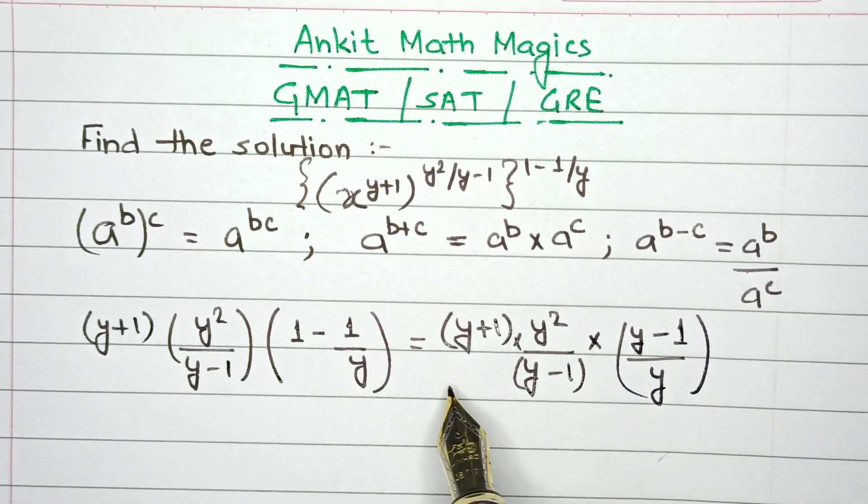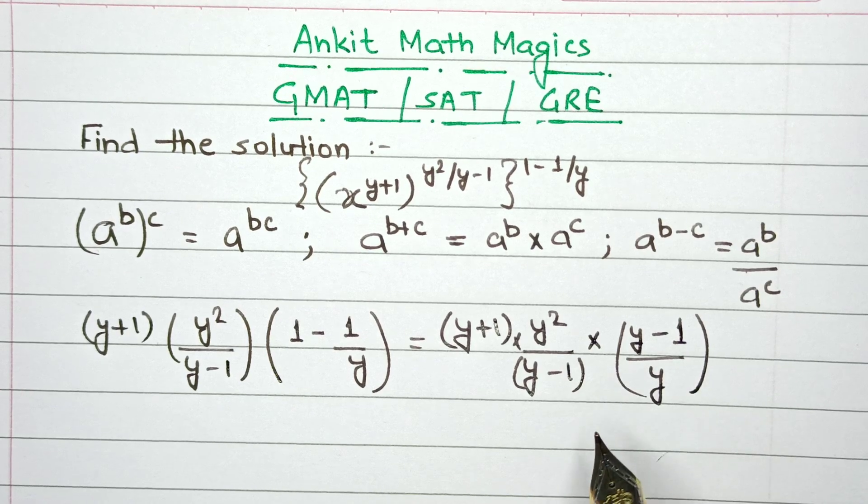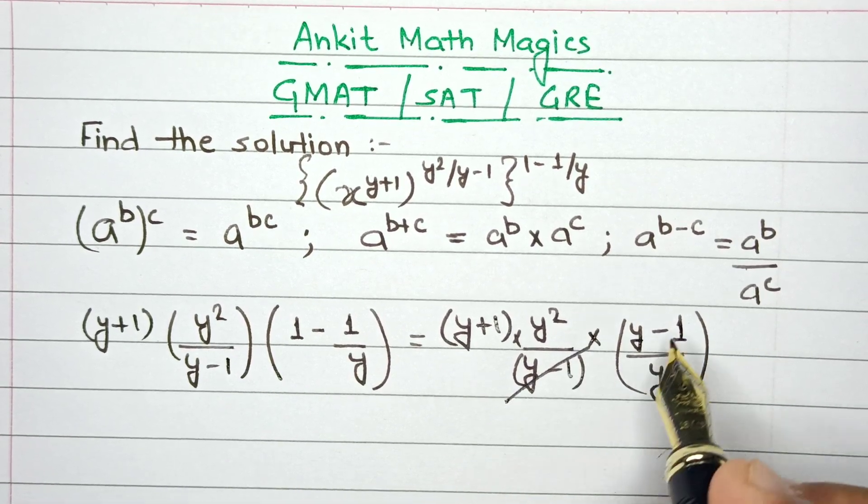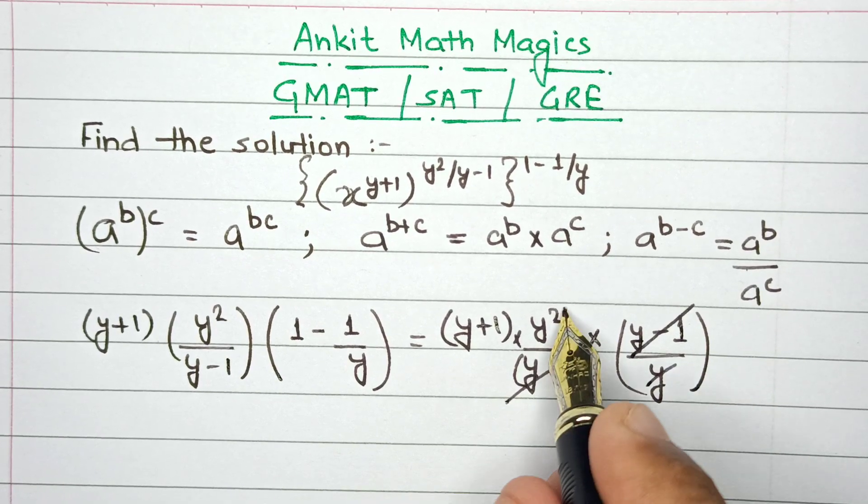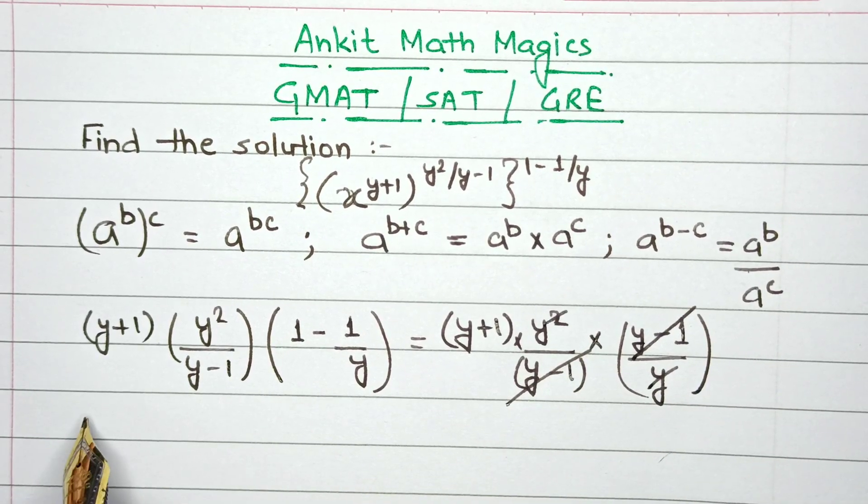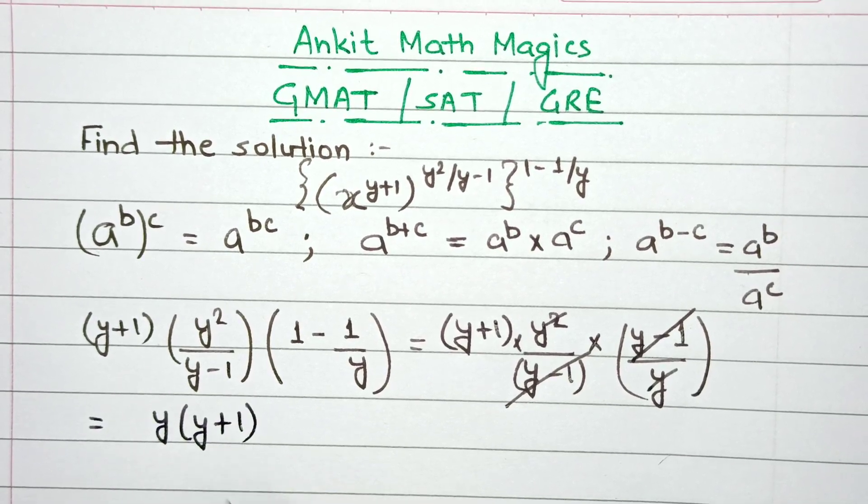I've applied the property to simplify the powers so they can be cancelled or calculated. (y-1) and (y-1) cancel out. This y cancels with y², and finally we're left with y multiplied by (y+1).